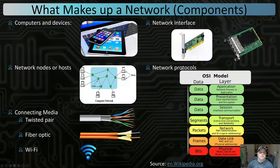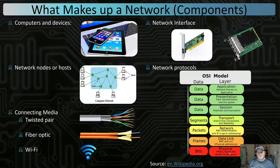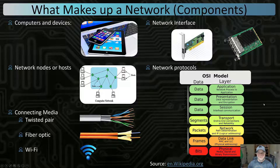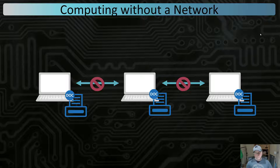What makes all this work are network protocols — think of these as network rules. There are seven layers: Application, Presentation, Session, Transport, Network, Data Link, and Physical. They all do their own part in allowing us to communicate, basically sending ones and zeros over the physical media. We'll talk about these in a later lecture in detail.